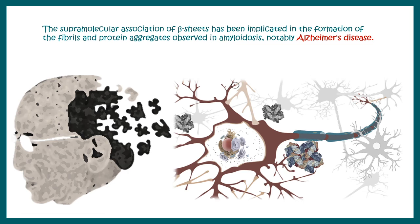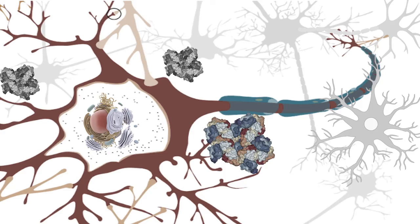The supramolecular association of beta pleated sheet has been implicated in neurodegenerative diseases like Alzheimer's, where it can form aggregations. Beta pleated sheet interactions with each other are very important in the context of disease.